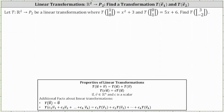Let the transformation from R2 to P2 be a linear transformation where T of the vector (1, 0) equals x squared plus 3, and T of the vector (0, 1) equals 5x plus 6. We're asked to find the transformation of the vector (3, negative 2).